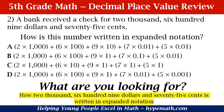Is it A: 2 times 1,000, plus 6 times 1,000, plus 9 times 10, plus 7 times 0.01, plus 5 times 0.01? Or is it B: 2 times 1,000, plus 6 times 100, plus 9 times 1, plus 7 times one tenth, plus 5 times one hundredth? Or is it C: 2 times 1,000, plus 6 times 10, plus 9 times 1, plus 7 times 1, plus 5 times 1? Or lastly, D: 2 times 1,000, plus 6 times 100, plus 9 times 1, plus 7 times one hundredth, plus 5 times one thousandth?